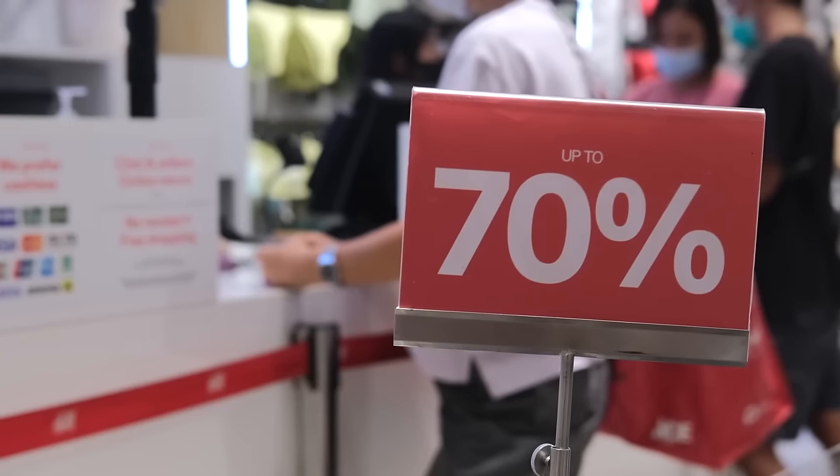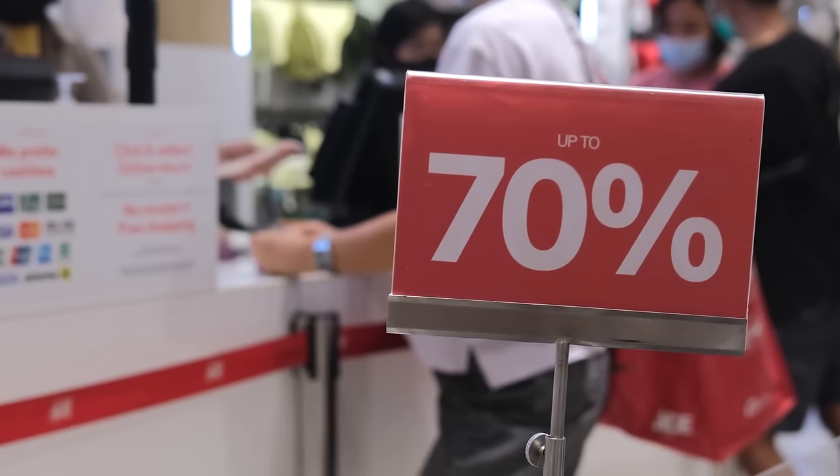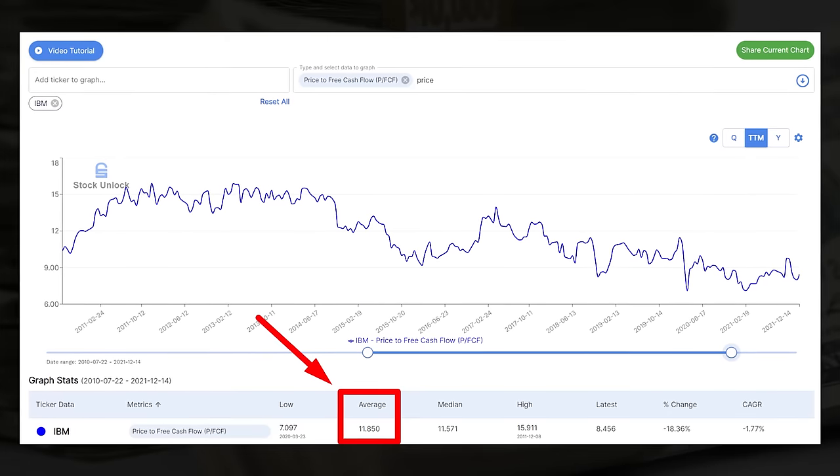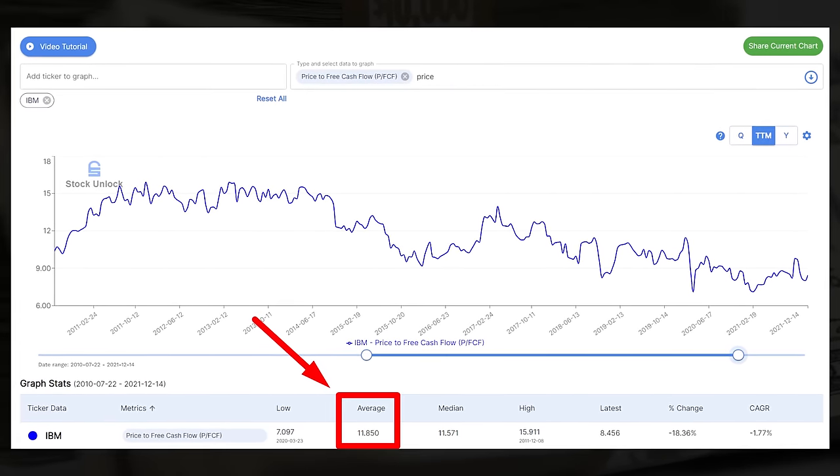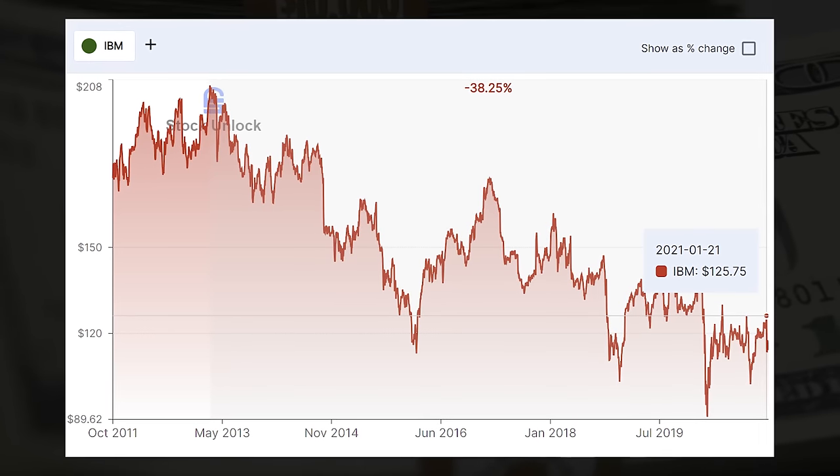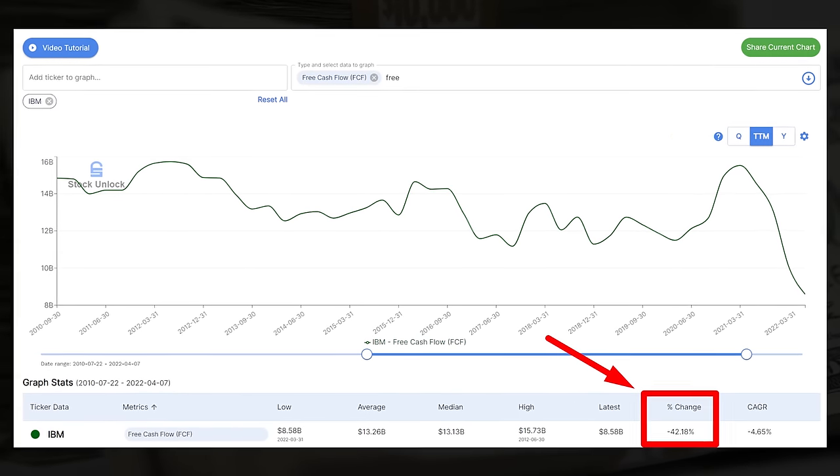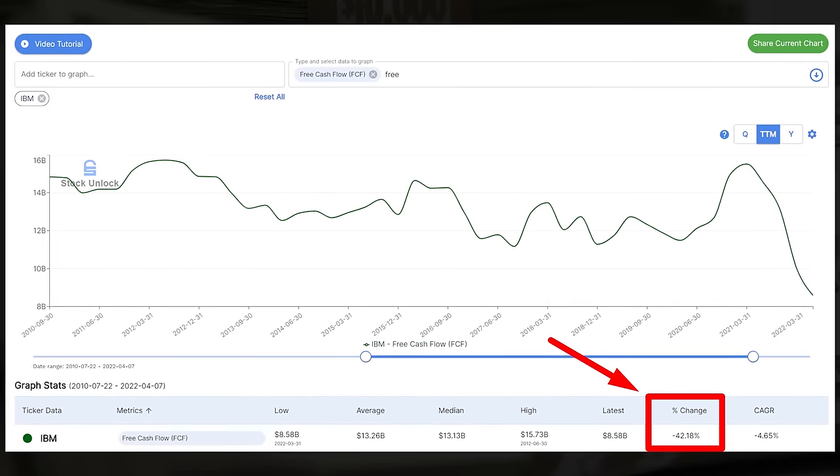Seth tells us that investors should not just be focused on the earnings of the business today because earnings can be disrupted in the future. Therefore, buying a stock at a seemingly low price ratio does not mean that it's guaranteed to result in a successful investment. For example, from 2010 to 2022, IBM has traded for an average price-to-free-cash-flow of 11.85, which is considered quite low. However, during this time, IBM's share price lost 38% of its value. This means that despite investors paying a low price ratio for the business, they still lost money on the stock for 12 years straight.